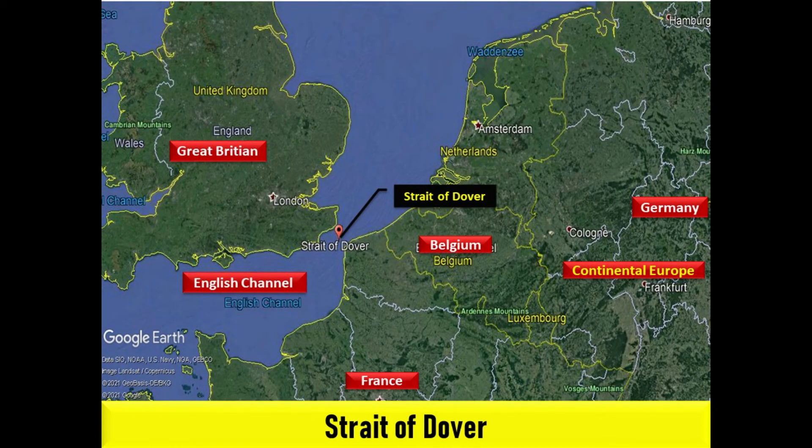The Strait of Dover, historically known as the Dover Narrows, is the strait at the narrowest part of the English Channel, marking the boundary between the channel and the North Sea, separating Great Britain from continental Europe. Between these points lies the most popular route for cross-channel swimmers. The entire strait is within the territorial waters of France and the United Kingdom, but a right of transit passage under UNCLOS exists allowing unrestricted shipping. On a clear day, it is possible to see the opposite coastline of England from France and vice versa with the naked eye, with the most famous sight being the white cliffs of Dover from the French coastline.